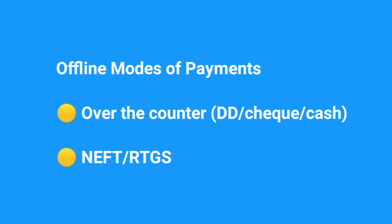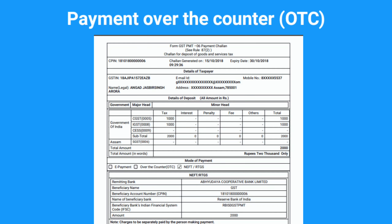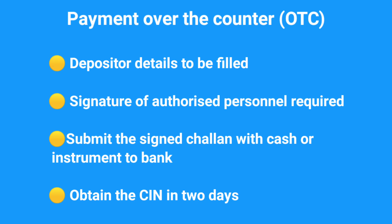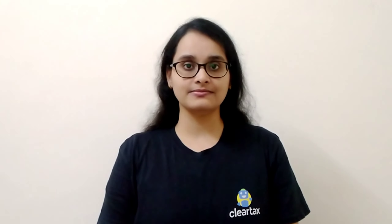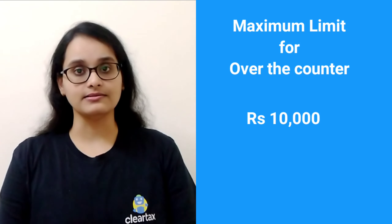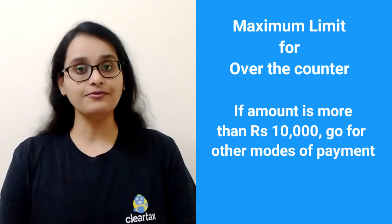Offline Payments include Over-the-Counter, i.e. cheque, DD or cash, and NEFT or RTGS. Go for these options when your bank's name is not reflected in the list of banks for net banking or card payment, or you want to pay GST via demand draft, cash or cheque. Either with or without logging in, generate a challan, take a printout of it, fill in depositor and instrument details, sign and submit it to the bank for completing the payment. In case of Over-the-Counter or OTC, banks will process the instruments in a day or two and your cash ledger gets updated. Note that the maximum amount of GST you can pay via OTC is Rs. 10,000, so if the amount exceeds this limit, then go for other modes.